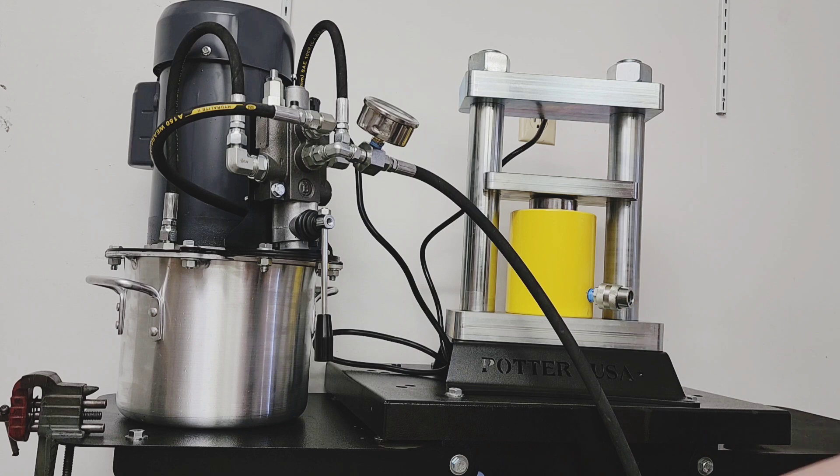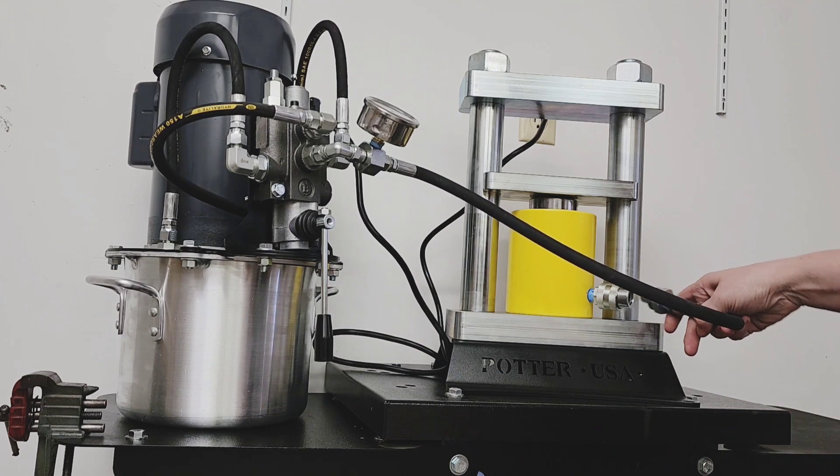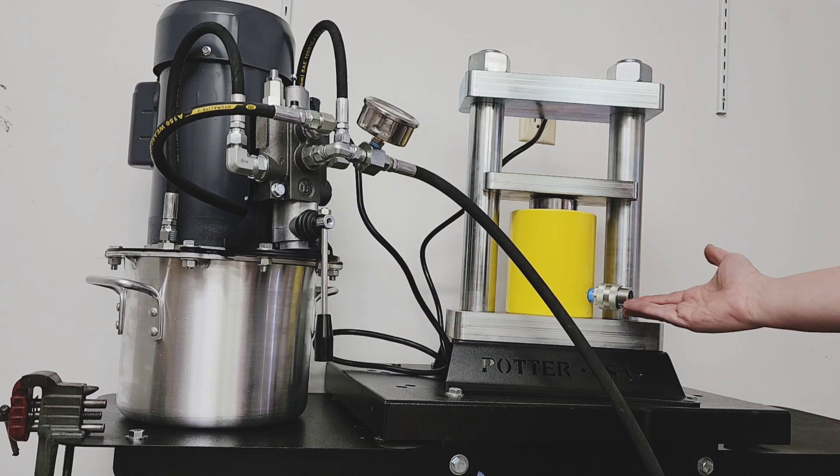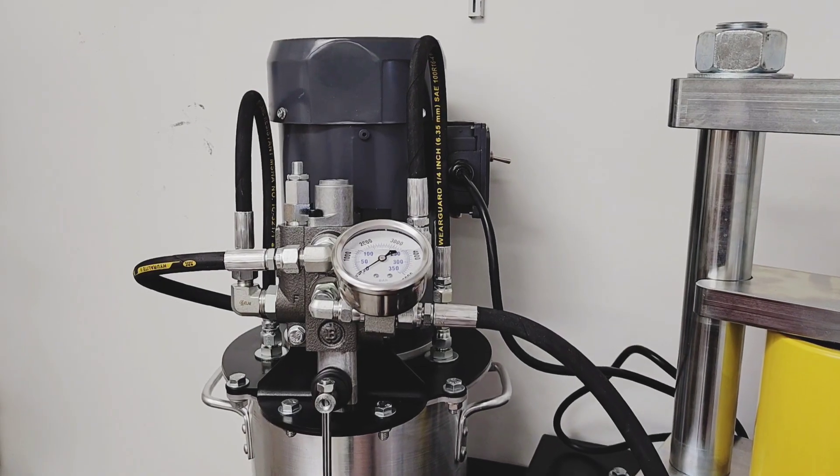The electric pump uses a quick connect mechanism to connect to the cylinder. We prefer that the connection point on the cylinder faces toward the back of the press, but this is entirely up to you.